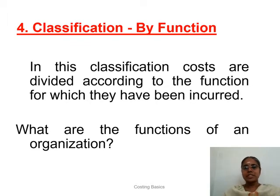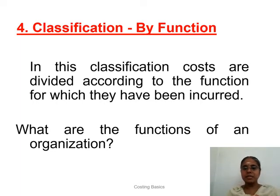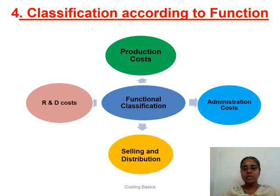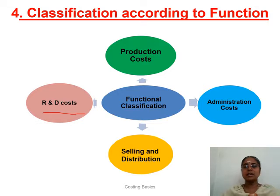The fourth type is classification based on function. The functions occurring in an industry are production, administration, selling and distribution, and R&D. We usually do not include R&D cost when calculating product cost, but it is one type of classification. R&D is dealt under certain heads but not in the cost sheet.